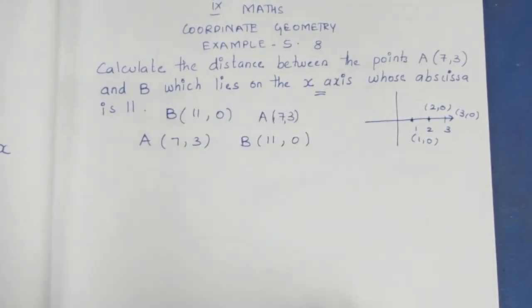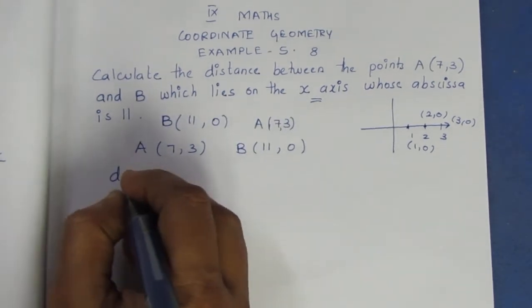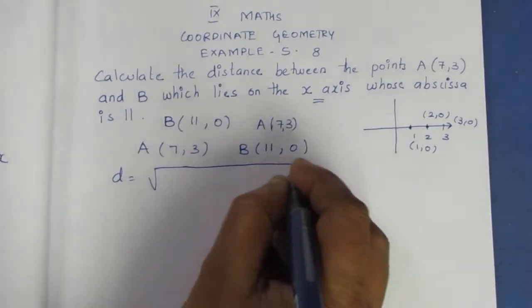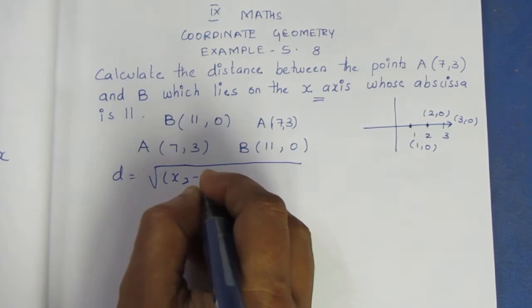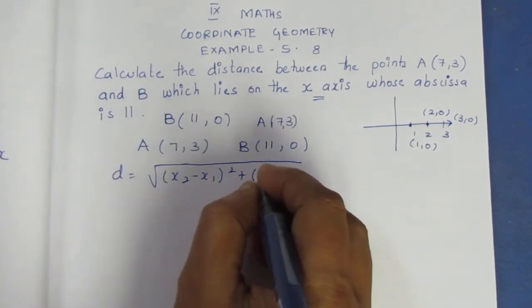Distance formula: d equals root of (x2 minus x1) whole square, plus (y2 minus y1) whole square.